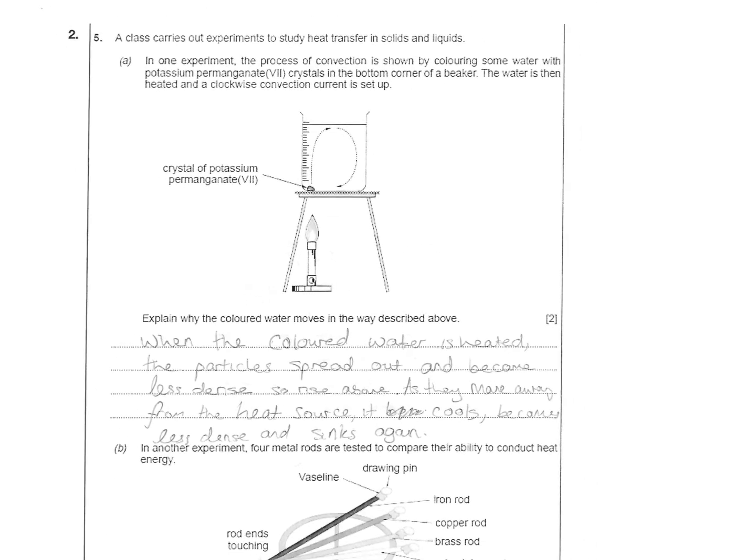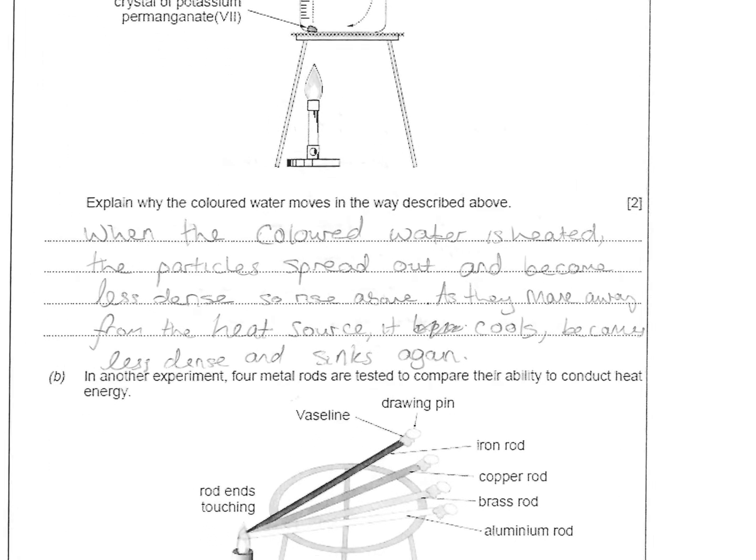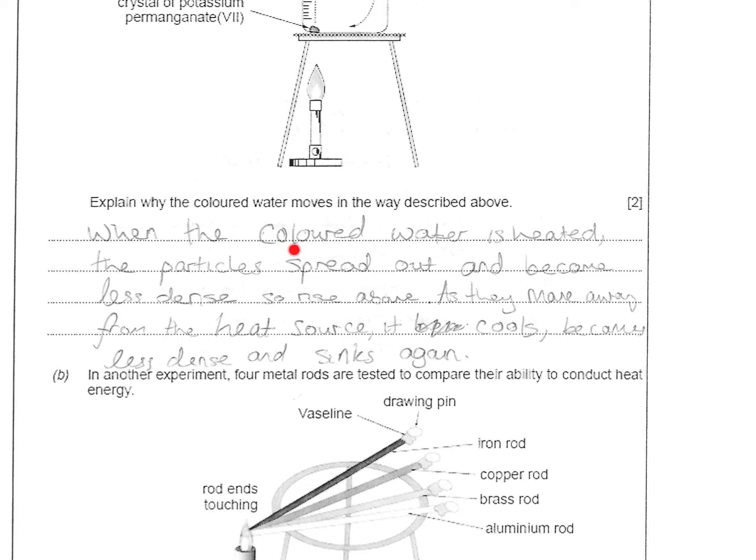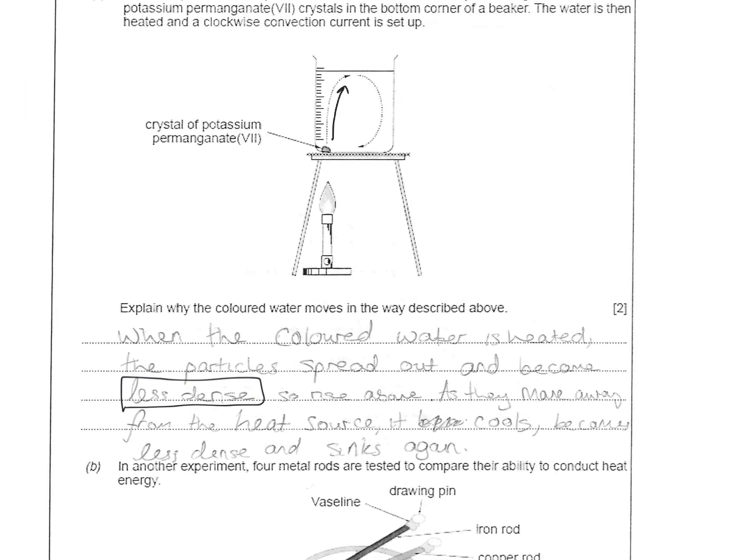This is looking at different experiments. The first experiment says explain how the coloured water moves in the way as described above. When coloured water is heated, the particles spread out and become less dense - a really important buzzword here. So they rise. As they move away from the heat source, they cool and become more dense and sink back down. The ones up here are going to be warm and less dense. The ones by here are going to be colder and more dense and they fall. This creates a current which goes on and on until there's none of the potassium permanganate left or the heat source runs out.